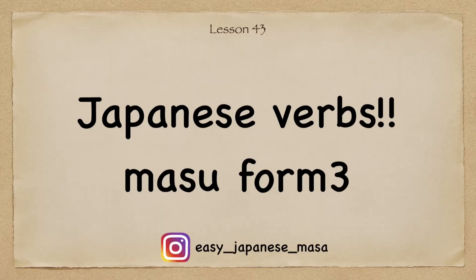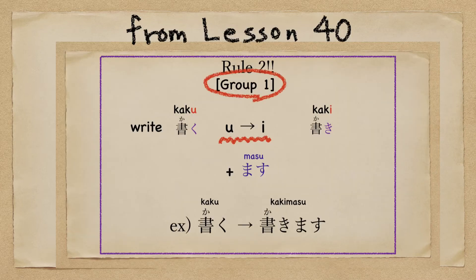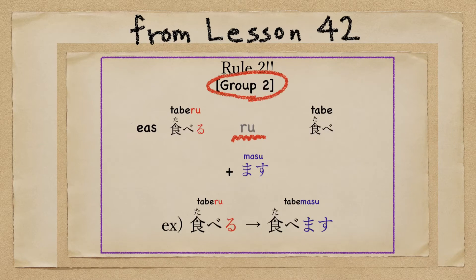Lesson 43, Mass Form Group 3. You know how to make the mass form for Group 1, where 'u' changes to 'i', and Group 2, where you throw away 'ru'.